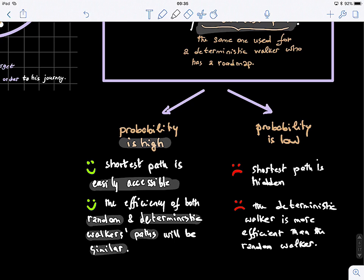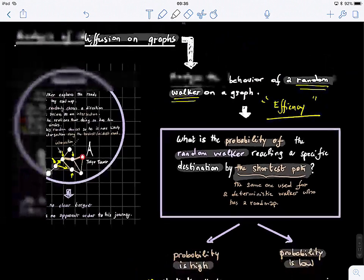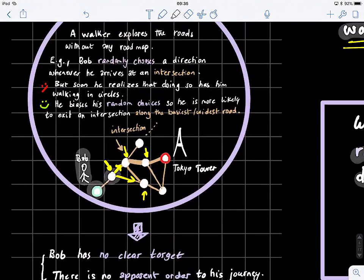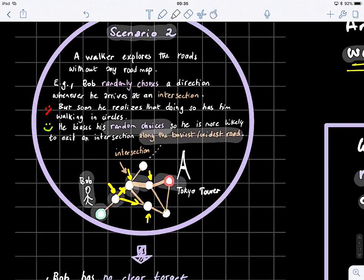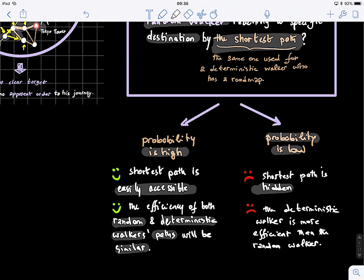When the probability is low, it means the shortest path might be hidden — the random walker cannot easily find it, even if it biases its choices along the busiest roads or strongest connections. This depends on the topology and structure of the graph. It also means the deterministic walker is more efficient than the random walker. Depending on the data, the problem, and the size of your graph, you might want to use either the shortest path routing model or the diffusion model.